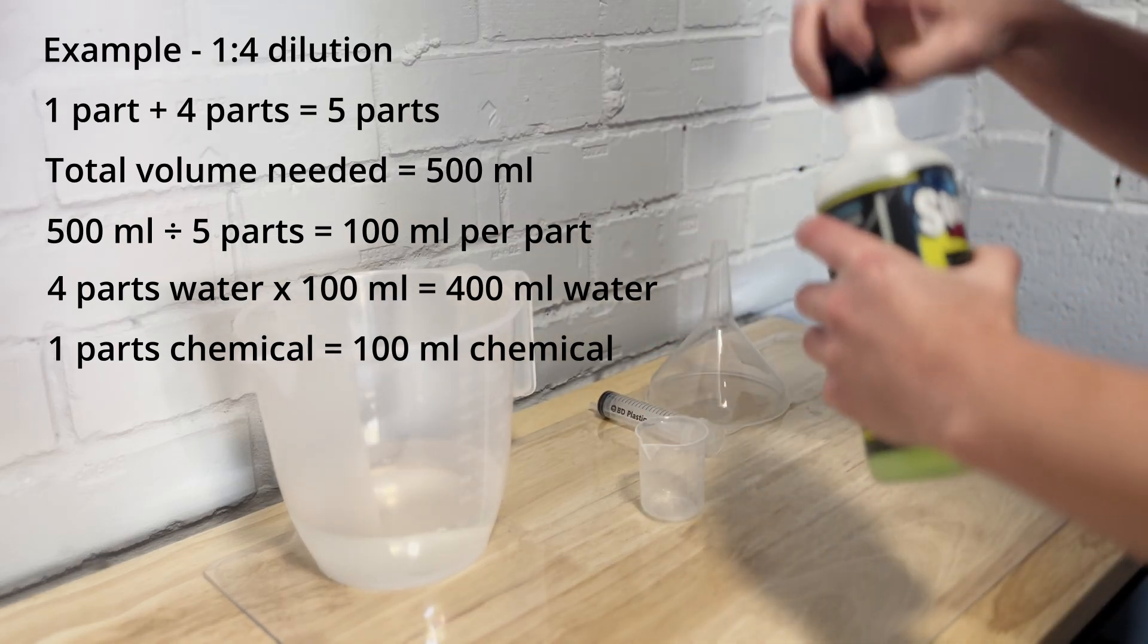So then you've got the final bit which is just to add the chemical, so that is that just one part that we discussed previously. So in this example that one part is 100 ml or 3.2 ounces so I'm just going to get my little measuring cylinder here and measure out 100 ml.